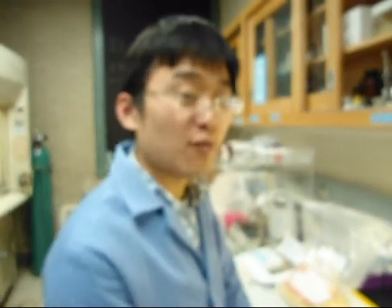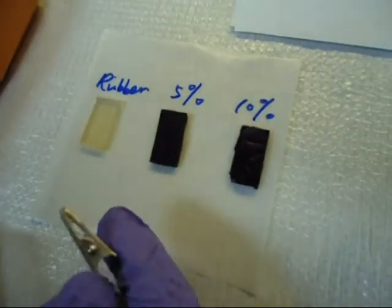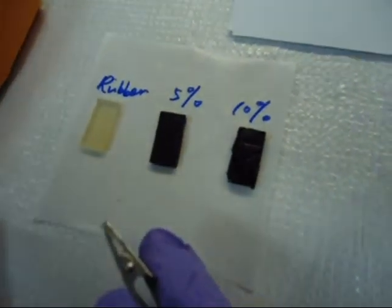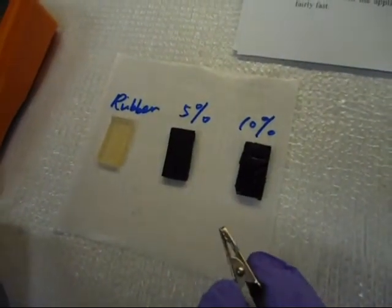Now, we have used hot press to make the sample bars. Here are three sample bars. The first is intrinsic rubber. The second is with 5% of graphite added into the rubber. The third one has 10% of graphite added into the rubber.